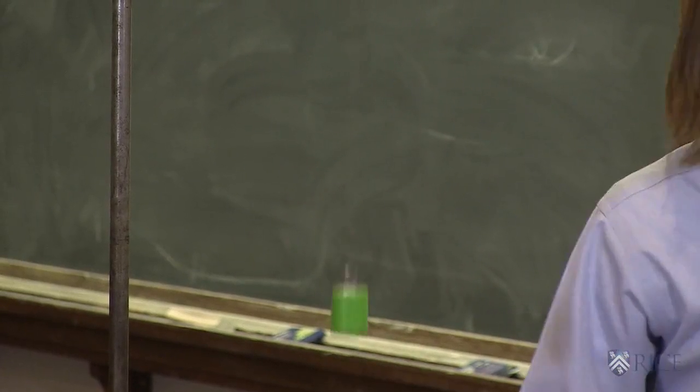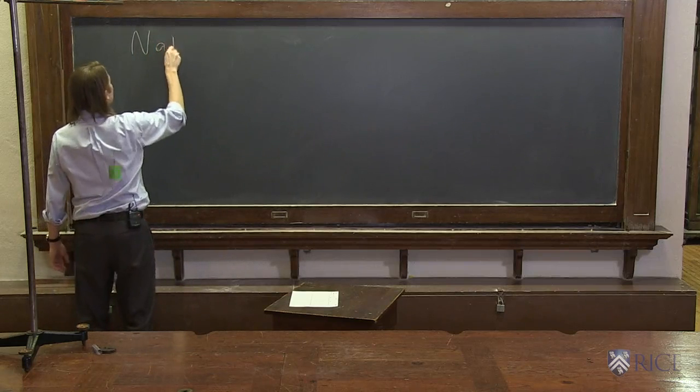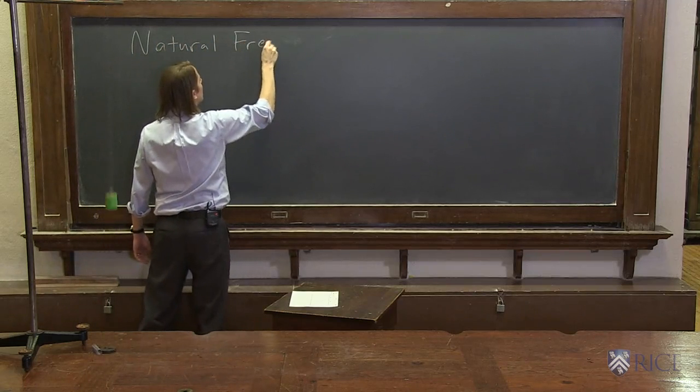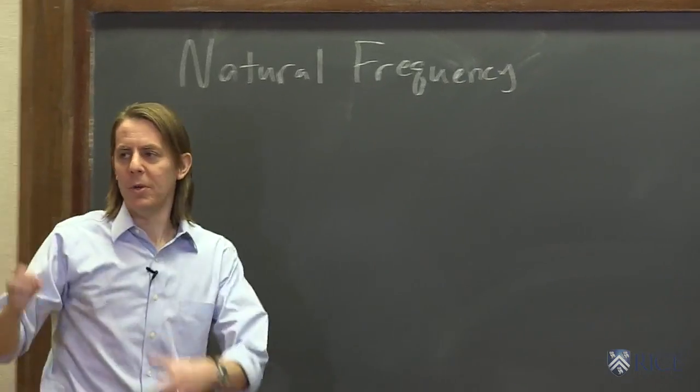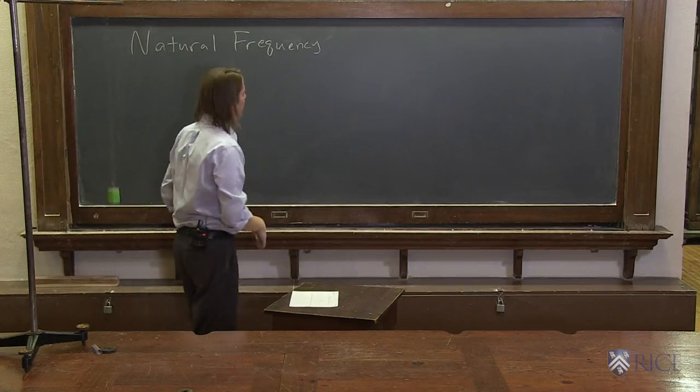So the amplitude is free to vary, but the frequency seems to be set. So this is called the natural frequency because it is the natural frequency at which an oscillator likes to go. All oscillators have some natural frequency.